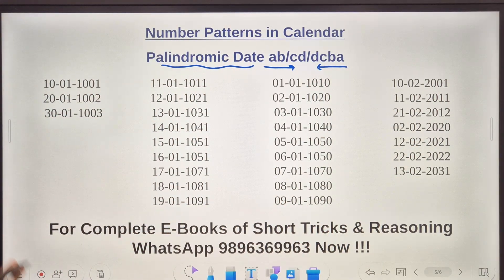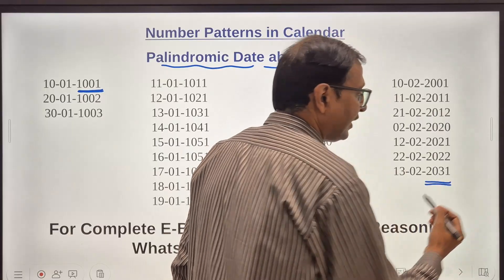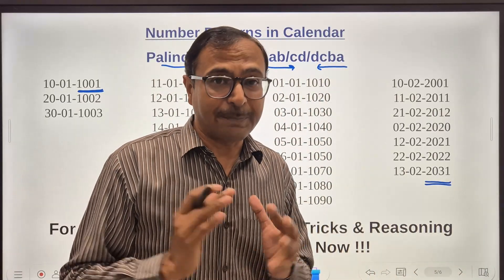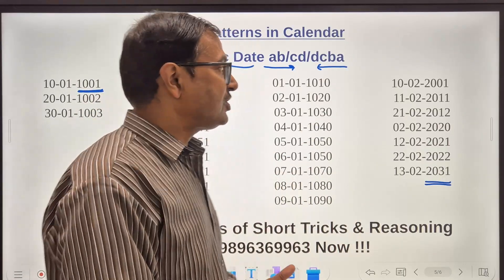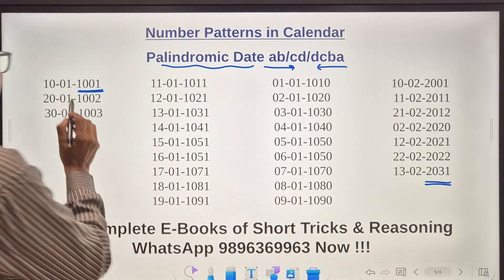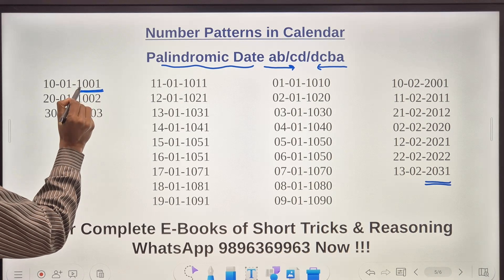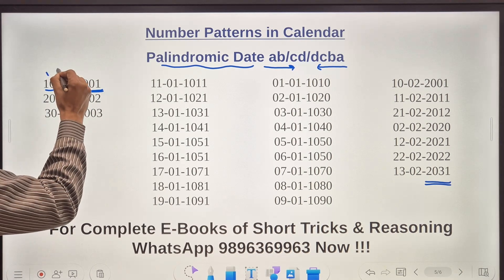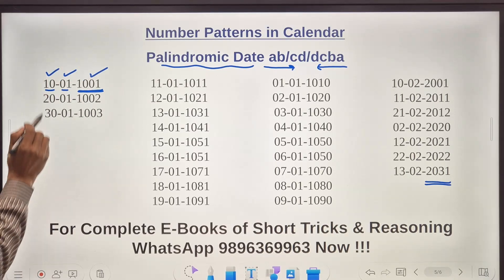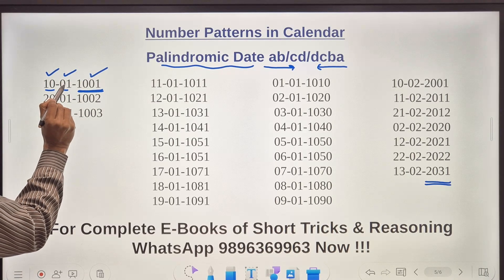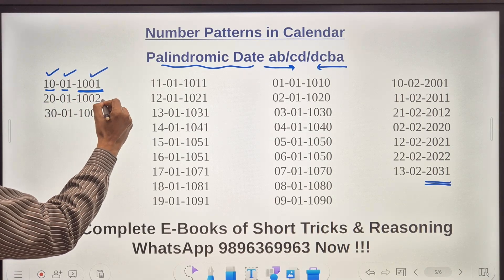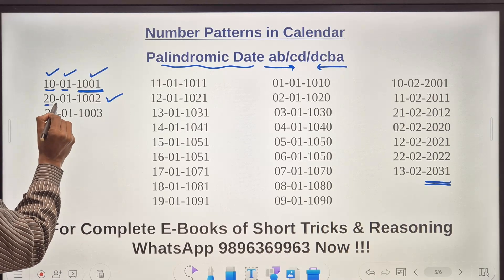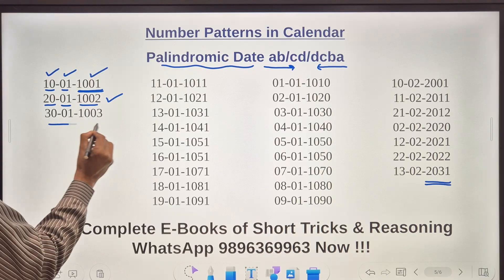So if you start with the year 1001 and I have listed it up to 2031 and this is not a comprehensive complete list. You can even find so many different more dates on which you have a palindrome. Here we have 1001, so 10th January 1001 was a palindromic date. You read it from the left to right 10-01-1001, from the right hand side 1001-01-10.